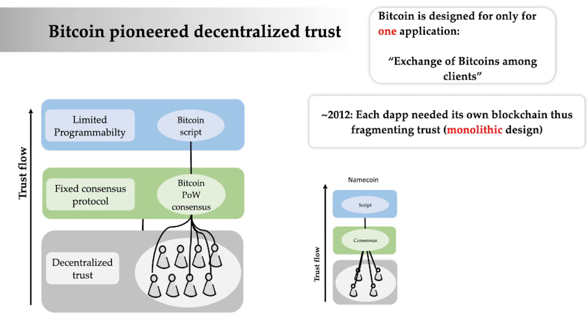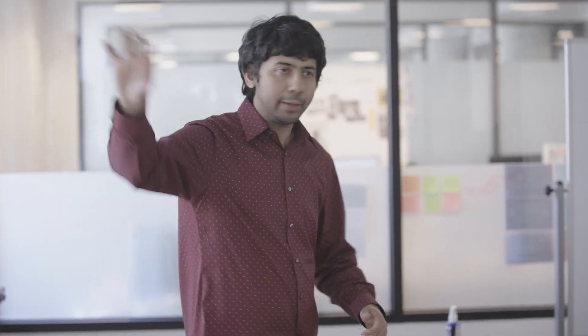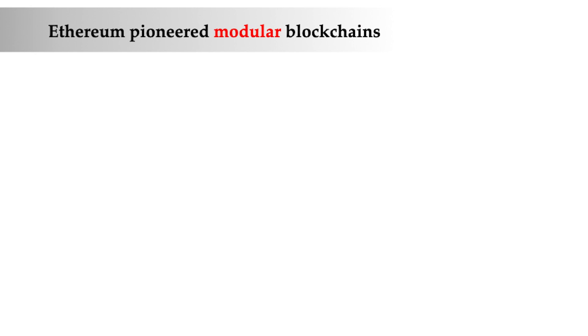This is the story circa 2011-2012 — color coin, meta coin. Any new application needed to create its own decentralized trust network. Decentralized trust is an exotic variety of trust; it rarely happens. There should be very few decentralized trust networks, whereas each application having to create its own is clearly not the correct model. Many people realized this around this time — most prominently, Vitalik and friends, who pioneered the notion of what I call modular blockchains.